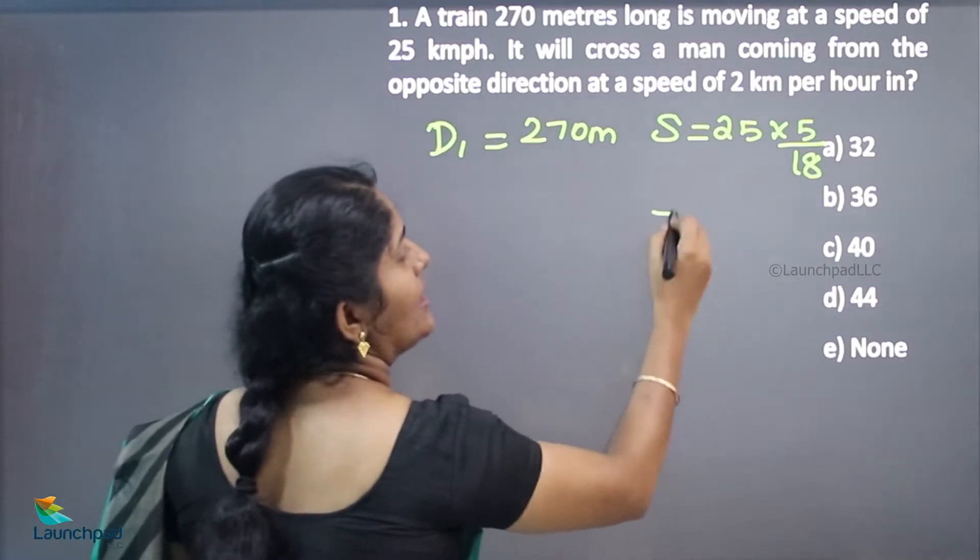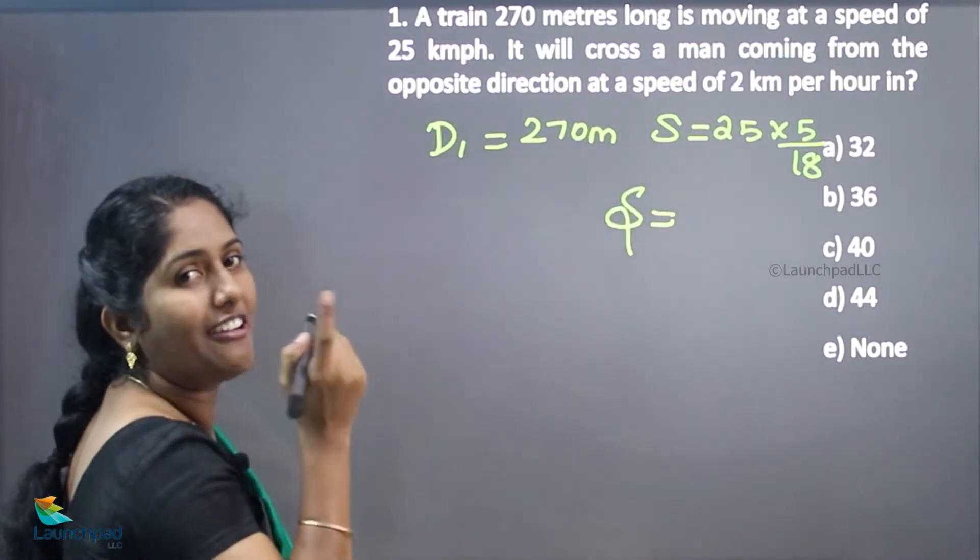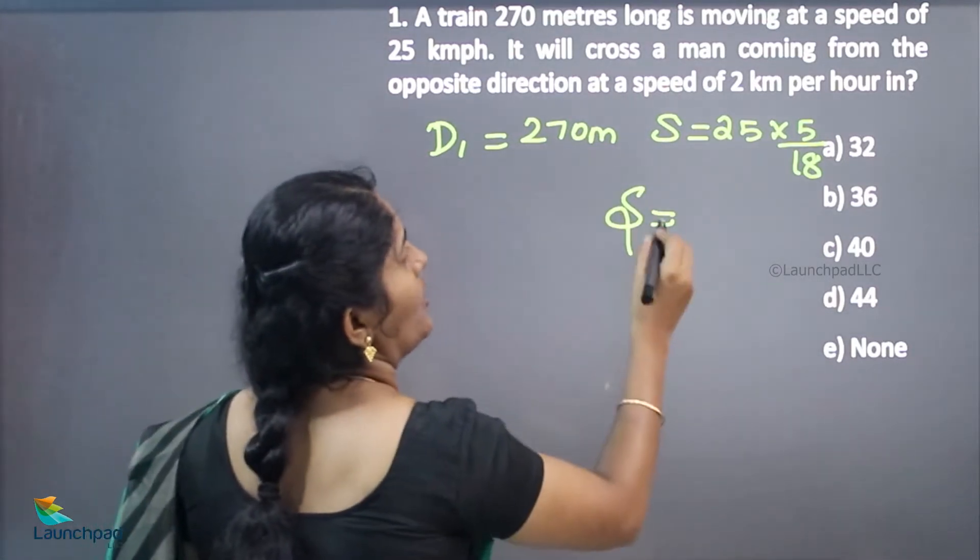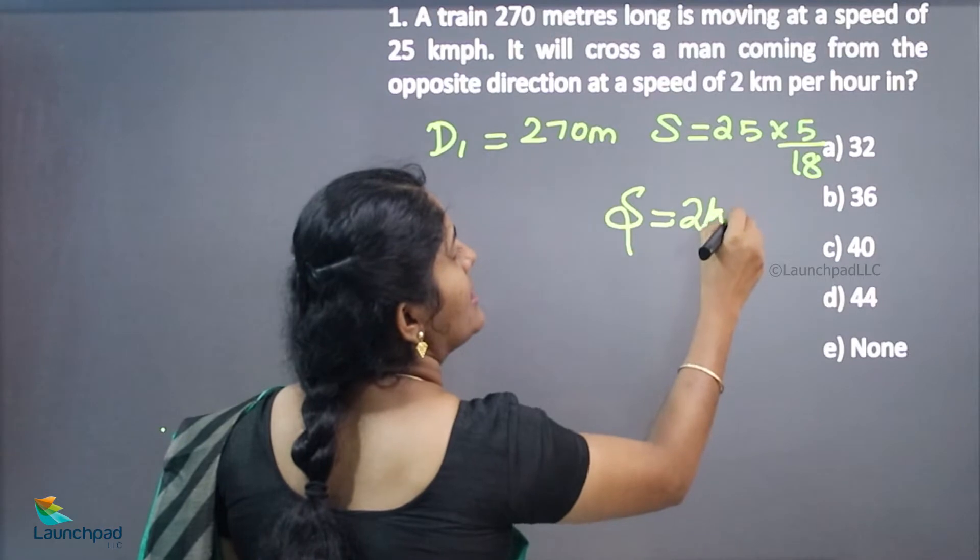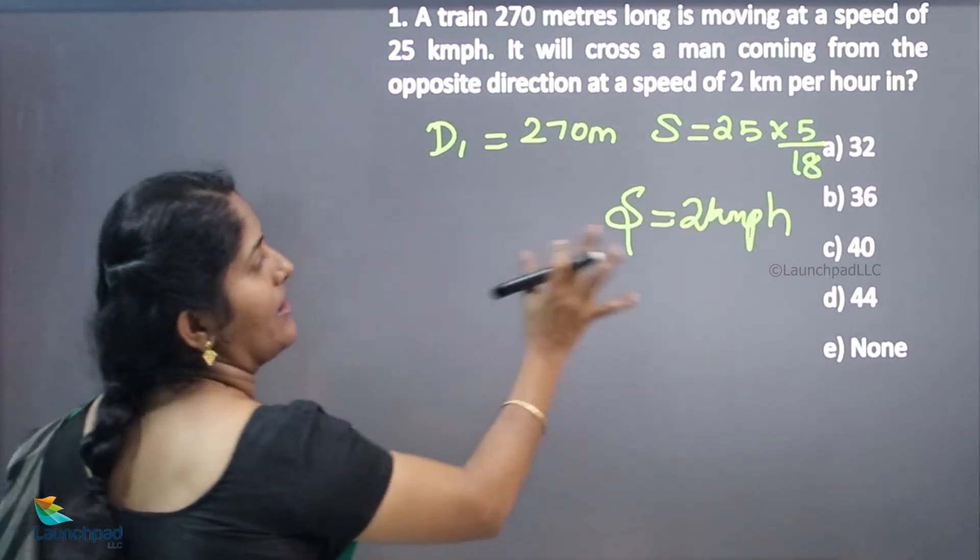Here, the man's speed is also available because both are running at relative speeds. The man's speed is 2 kilometers per hour.